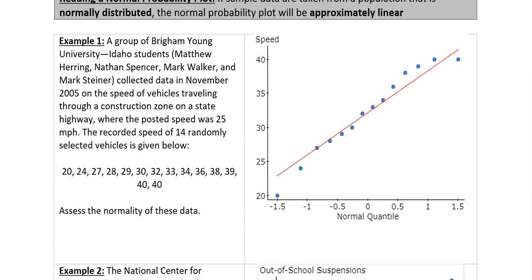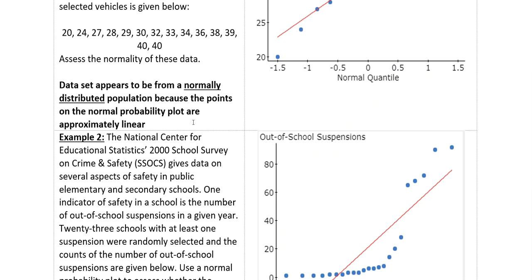So I'm going to write that up. So the dataset appears to be from a normally distributed population because the points on the normal probability plot are approximately linear. There you have it. Simple as that.